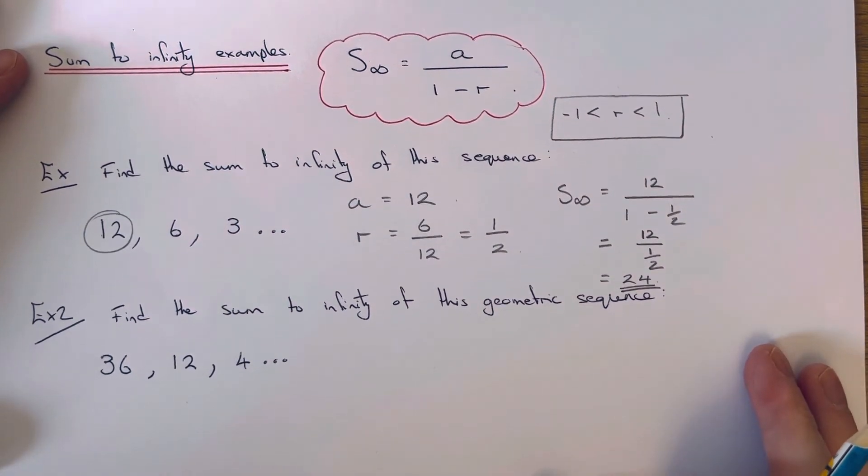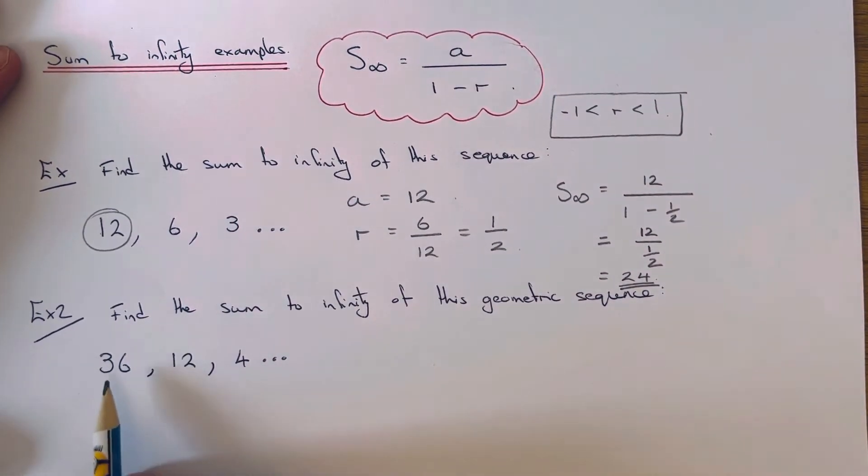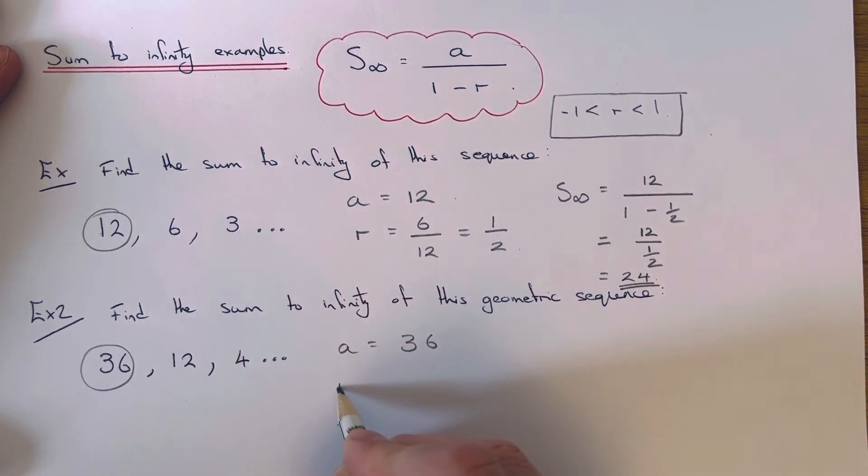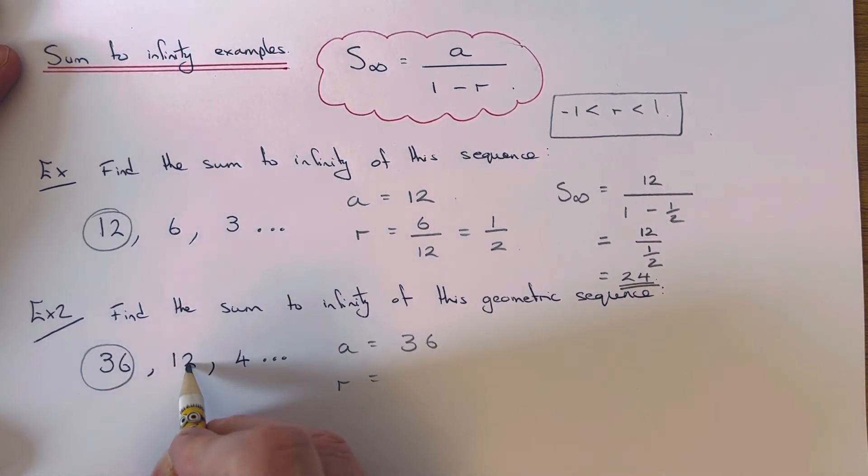So let's have a look at the second example here. So again, we've got to work out the sum to infinity of this geometric sequence. This time it's 36, 12, 4. So our first term of our sequence is 36. To get the common ratio, we divide the second number by the first number.